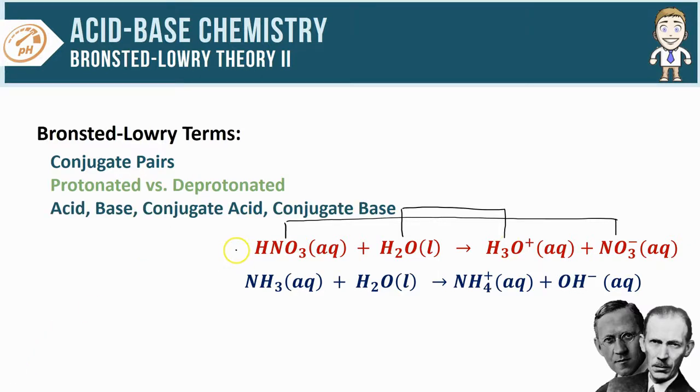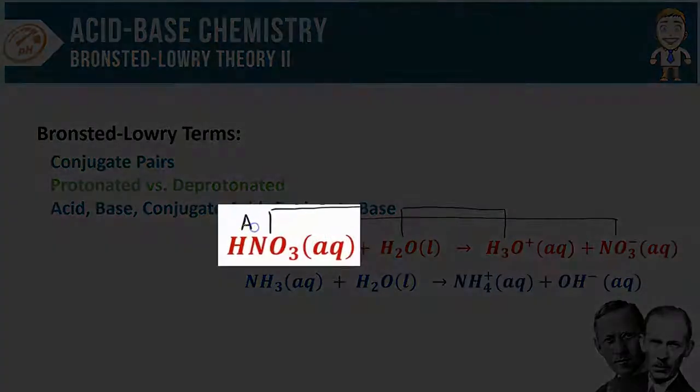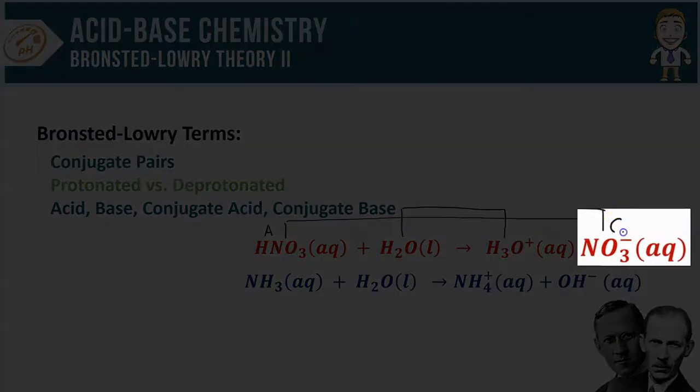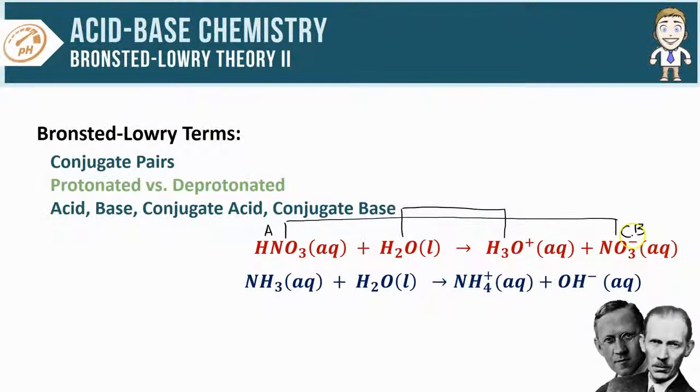These next four are really important: acid, base, conjugate acid, and conjugate base. We already know that HNO3 is functioning as the acid - I'm going to label that with a capital A. Well, that acid's conjugate pair on the product side is labeled that way, it's called the conjugate. Since it's the conjugate pair and it changes identity from an acid into a base, NO3- is the conjugate base of the acid HNO3. The weird part here is HNO3 is the acid because it's donating the H+, but that also means water is gaining that H+.